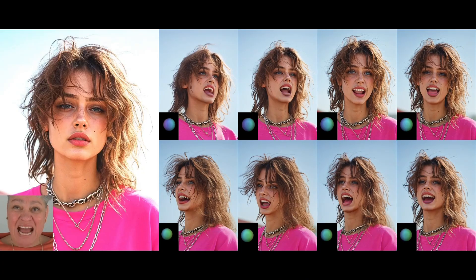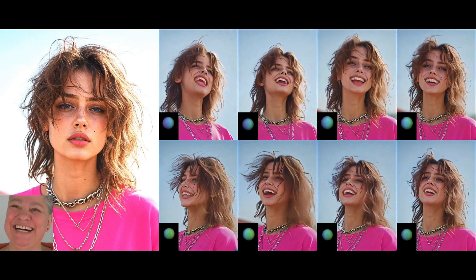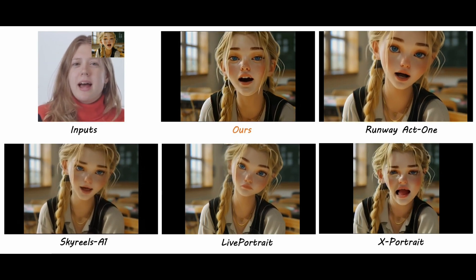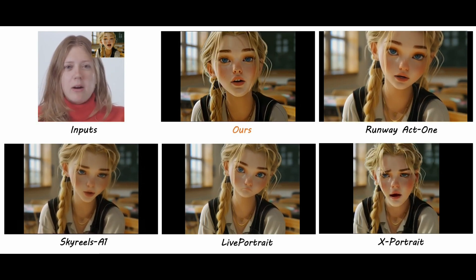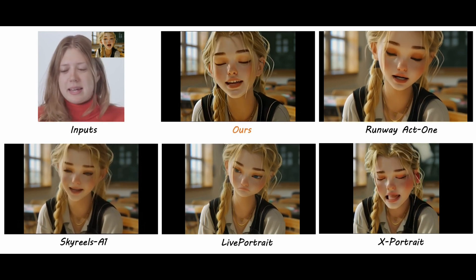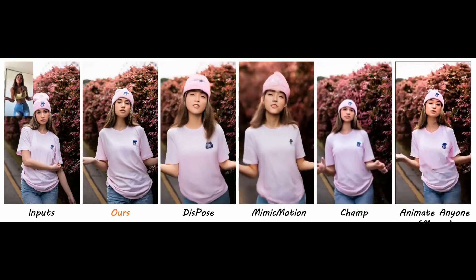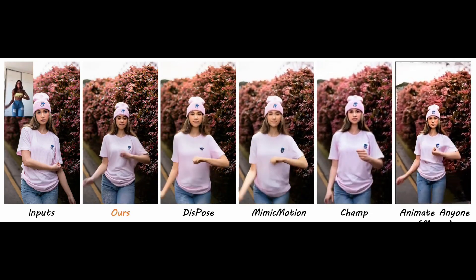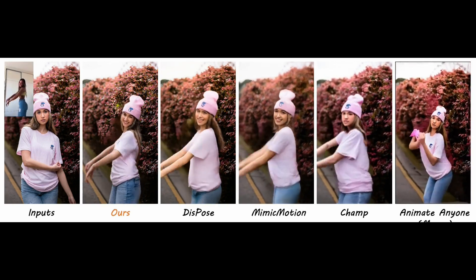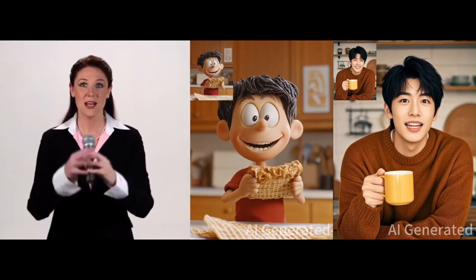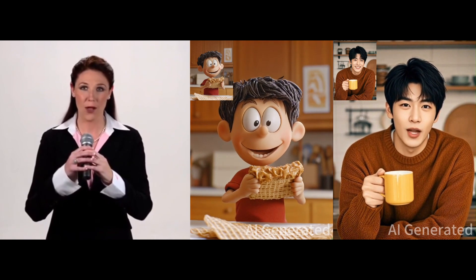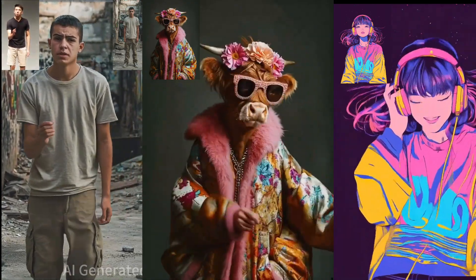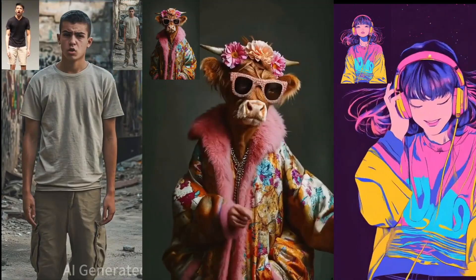Third, temporal coherence. No more frame jumping or identity flickering. Dream Actor M1 learns motion patterns and uses reference images to keep animations consistent, even in long, complex videos. But wait, there's more. It supports multi-language lip sync for audio-driven facial animation. You can choose to animate only facial expressions or head movement. Bone length adjustments allow for shape-aware animation. And yes, it handles dynamic head turns and body angles without breaking realism. It's robust across diverse character types and motion styles.